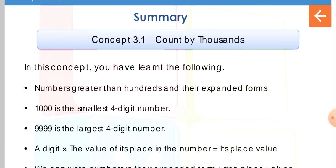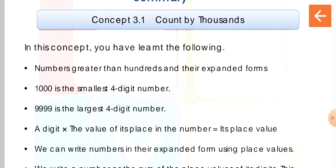In this chapter, first we learned about count by thousands — that is, numbers from 1000 to 9999. Children, can you tell me which is the smallest four-digit number? Yes, 1000 is the smallest four-digit number. Now, which is the largest four-digit number? That is 9999 — four nines. This is the largest four-digit number.